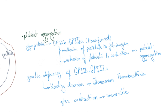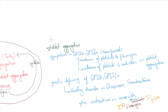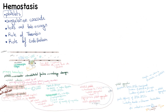Thrombin converts fibrinogen to fibrin, which is insoluble, creating the definitive secondary hemostatic plug. Leukocytes and red cells can also get trapped inside the plug due to leukocytes binding to p-selectin on the platelets.